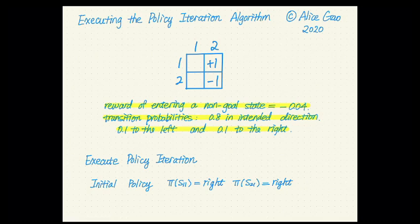For the policy iteration algorithm, we alternate between two steps: evaluating the policy and improving the policy. Let's start with an initial policy where we're going right in both states. I set this so that the example is substantial — we do have to go through multiple steps, but not too many. Starting from this initial policy, we're going to do policy evaluation, which means given this policy, we will figure out the corresponding utility values for the two states.